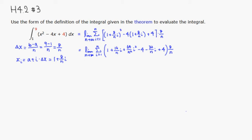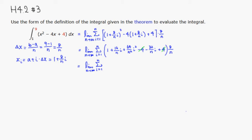Let's simplify. The -4 and +4 cancel out. Now let's collect the like terms. The limit as n approaches infinity, summation from i = 1 to n. The only term with i² is 64i²/n², and we still need to distribute the 8/n to it.